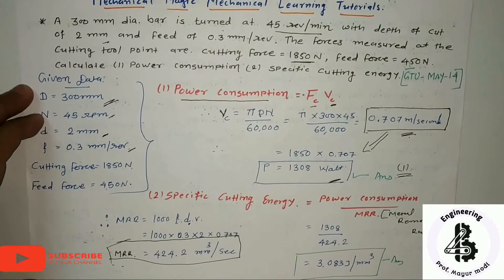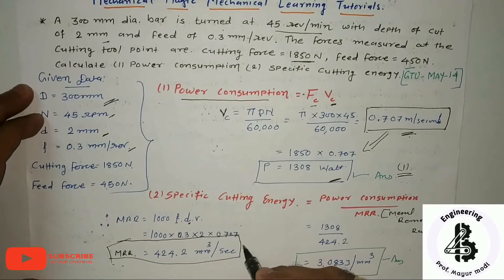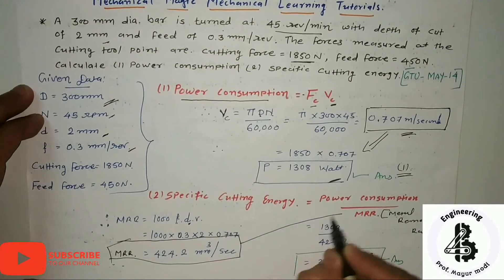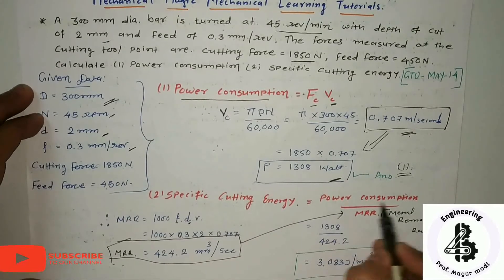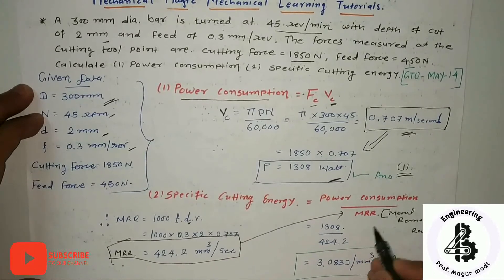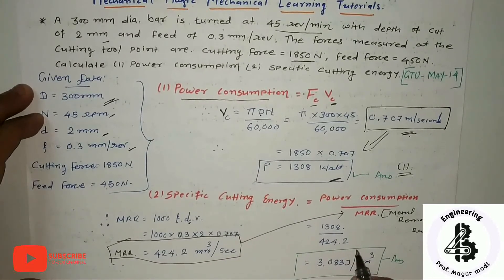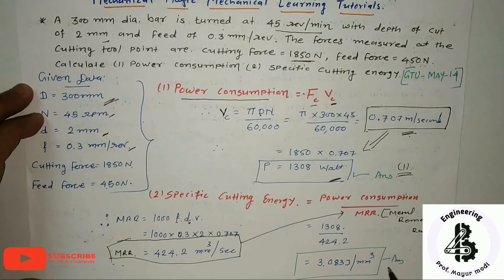Now substituting the values into the specific cutting energy equation: power consumption = 1308 W and MRR = 424.2 mm³/s, we get a specific cutting energy of 3.083 Joules per mm³. That is the specific cutting energy during this turning operation.